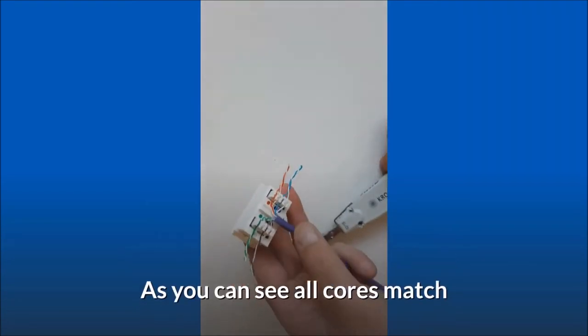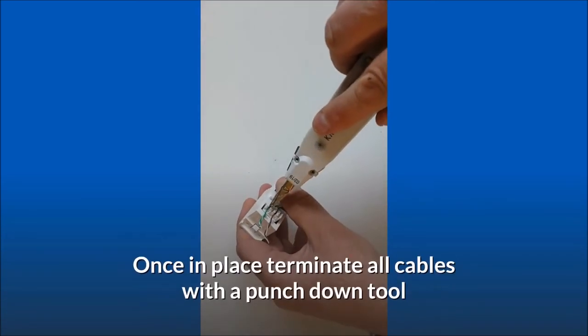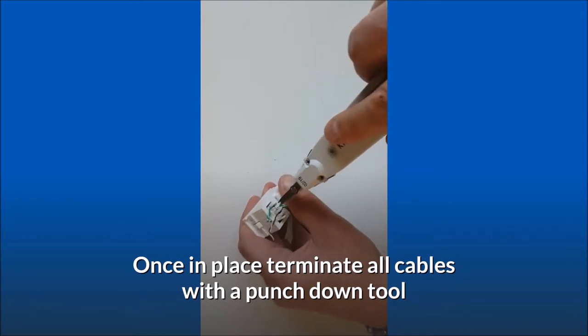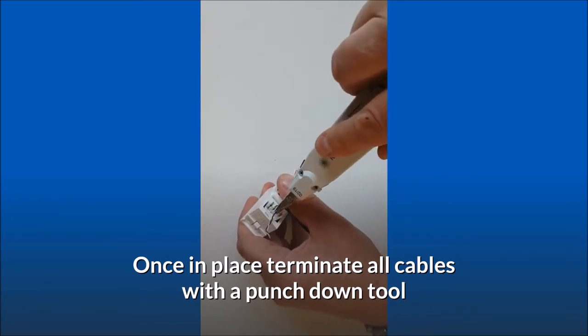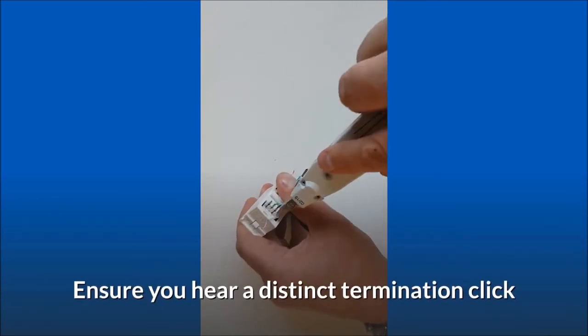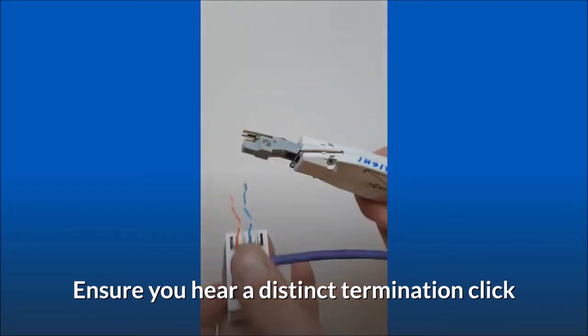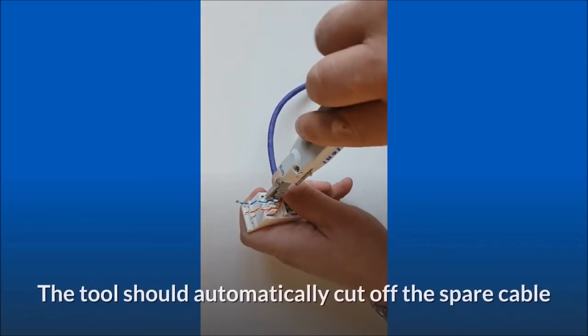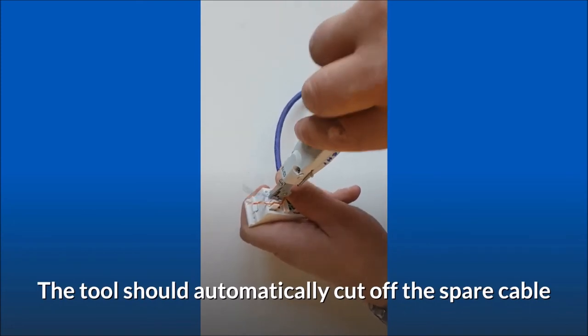As you can see all cores match. Once in place, terminate all cables with a punch down tool. Ensure you hear a distinct termination click. The tool should automatically cut off the spare cable.